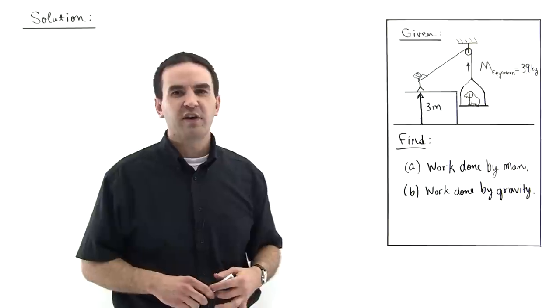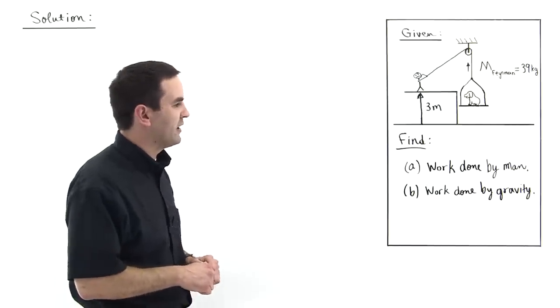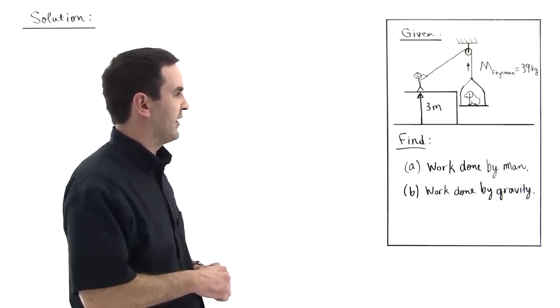Feynman has a mass of 39 kilograms, and in part A we're asked to find the work done by the man, and in part B we're asked to find the work done by gravity.